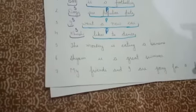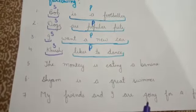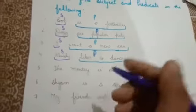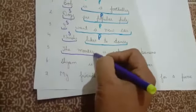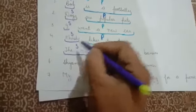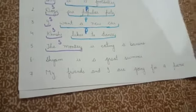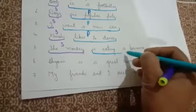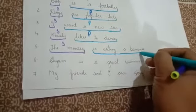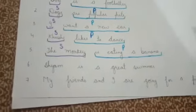'The monkey is eating a banana.' Here the sentence is talking about the monkey. So 'monkey' is the subject. And what is the action in this sentence? Eating a banana. So 'is eating a banana' is the predicate.